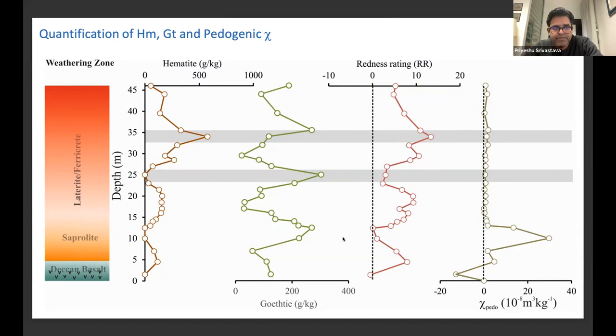Redness or the color characterization follows the typical hematite pattern. We can see that the hematite seems to be controlling the color distribution of these laterite or ferricrete samples. And again, we see that chi-pedo in the basalt, it is negative. Obviously, we don't expect much of the pedogenic magnetic minerals in the fresh basalt, but as the alteration in the saprolite progresses, we see very high chi-pedo. Then again, we lose all the pedogenic magnetic minerals in the laterite and ferricrete zone.